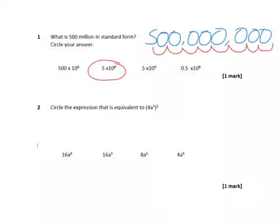In question 2, we've got something in brackets squared, so we're going to split it up into each part. So it's 4 squared, and then it's times by a to the power of 3 squared.